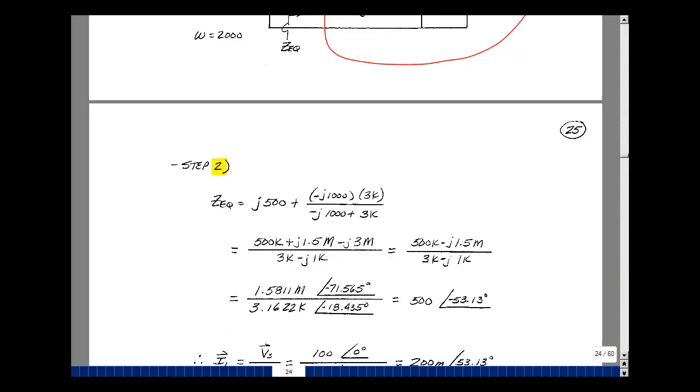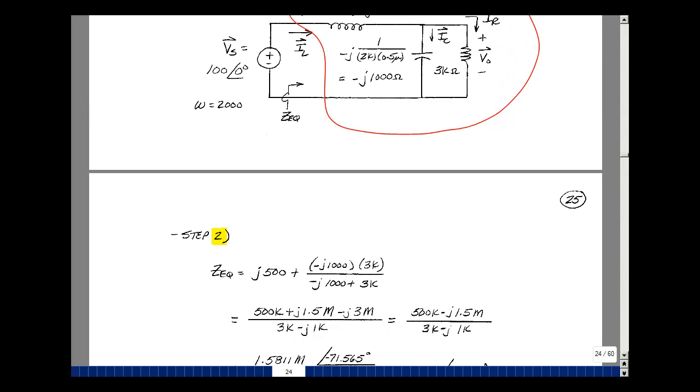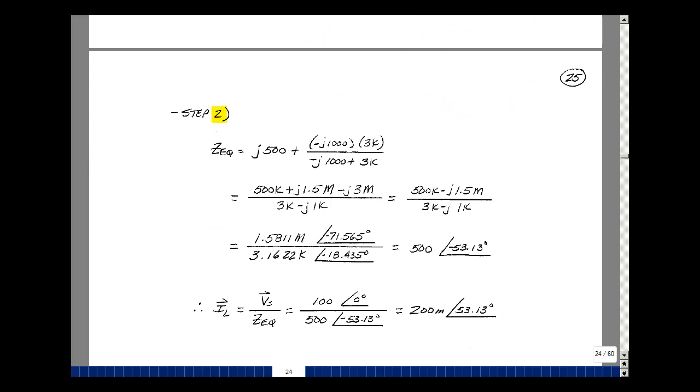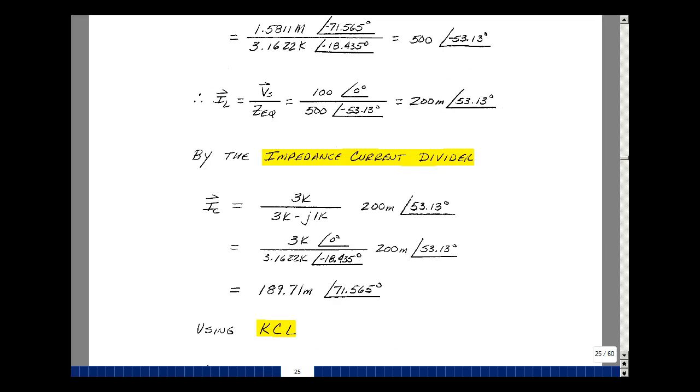So knowing that impedance now, I'm going to divide that into the voltage 100 at angle 0 and get the current I sub L. So I sub L is 100 at angle 0 divided by 500 at angle minus 53.13.